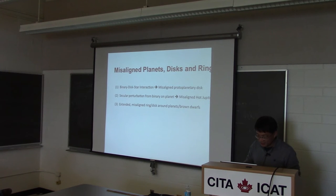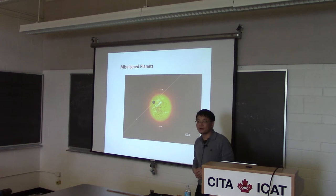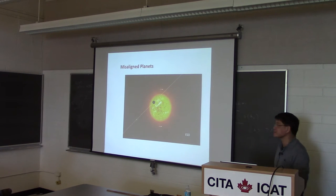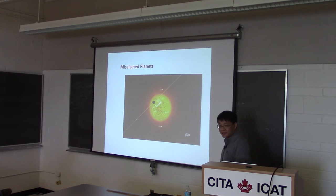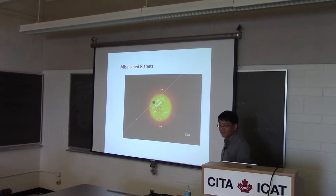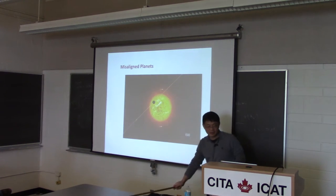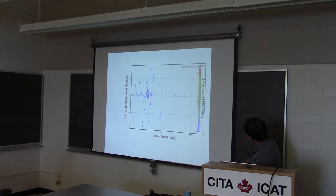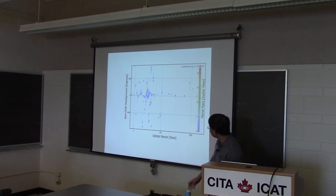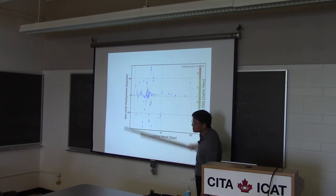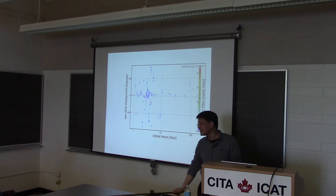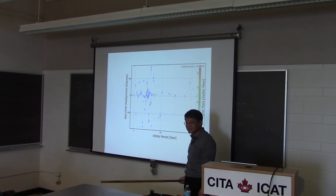Let me first talk about misaligned planets. One of the surprises in the era of exoplanets is that many exoplanetary systems are misaligned — in the sense that the orbital angular momentum axis of planets is misaligned with the spin axis of the host star. Here is the orbit, the orbital axis, and the spin axis of the star — they're misaligned. There are about 80 or 90 systems that have been measured; here are the spin-orbit misalignment angles as a function of orbital period. Many of them are indeed aligned, but a significant fraction are misaligned, and some are even retrograde, meaning greater than 90 degrees.